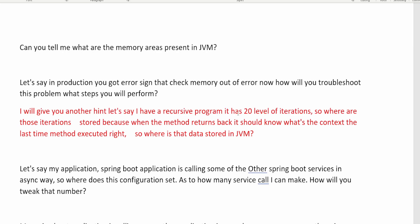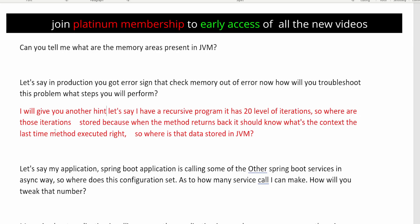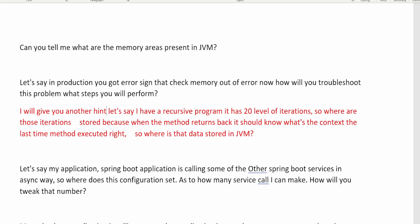Another question: let's say I have a recursive program with 20 levels of iteration. Where are those iterations stored? When the method returns, it needs to know the context of the last method executed. The answer is that in JVM there is a memory space called the method stack, which stores which method to call next. So these iterations will be stored inside the method stack area.